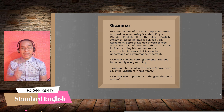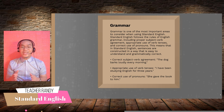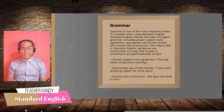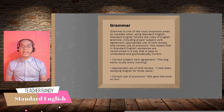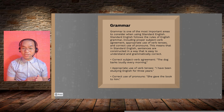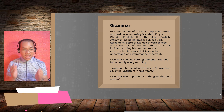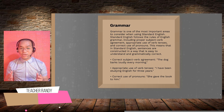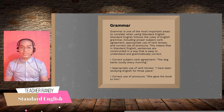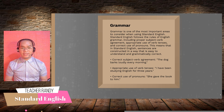In Standard English, sentences are constructed in a way that is easy to understand and grammatically correct. For correct subject-verb agreement, we say: 'The dog barks loudly every morning.' For the appropriate use of verb tenses, we say: 'I have been studying English for three years.' And for the correct use of pronouns, we say: 'She gave the book to him.'